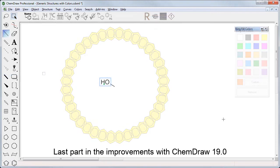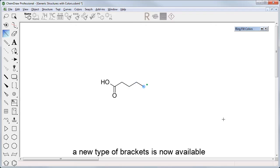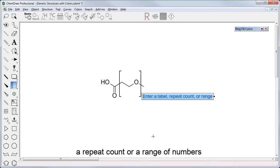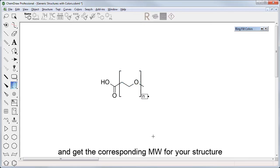Last part in the improvements for ChemDraw 19, a new type of brackets is now available, where you can enter either text, a repeat count, or a range of numbers and get the corresponding molecular weight for your structure.